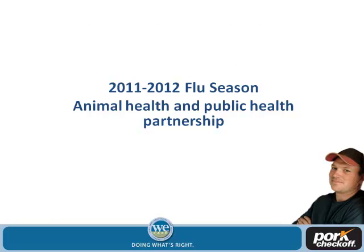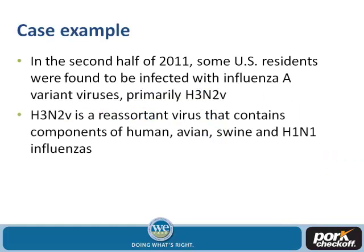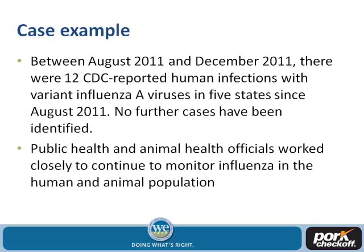Moving into the animal and public health partnership that has evolved since we put this program in place — as a case example, in the second half of 2011 we saw that some U.S. residents were found to be infected with a variant virus, primarily the H3N2 variant virus. Sue has already given a nice visual showing that it's a reassortant containing components of human, avian, swine, and H1N1 influenzas.